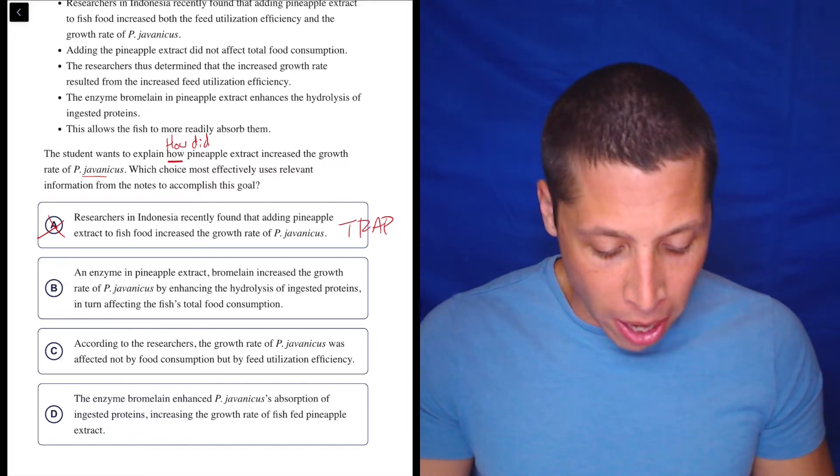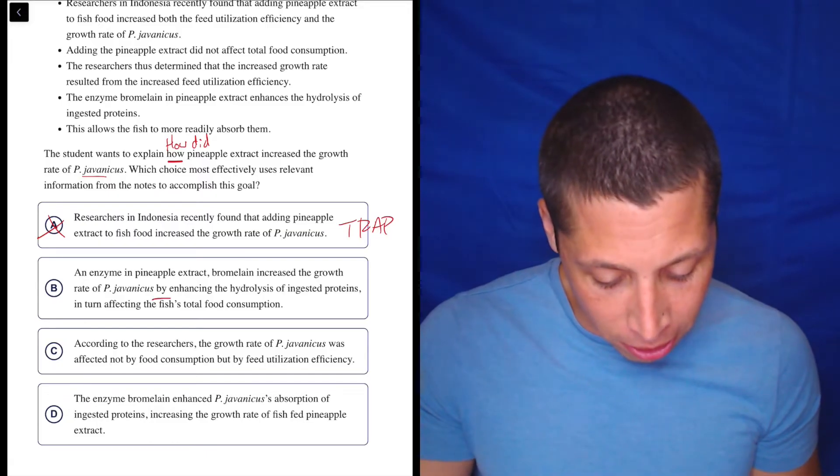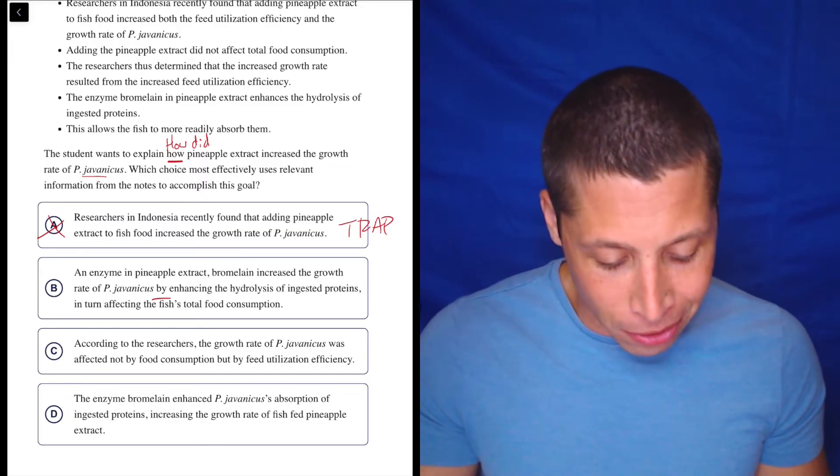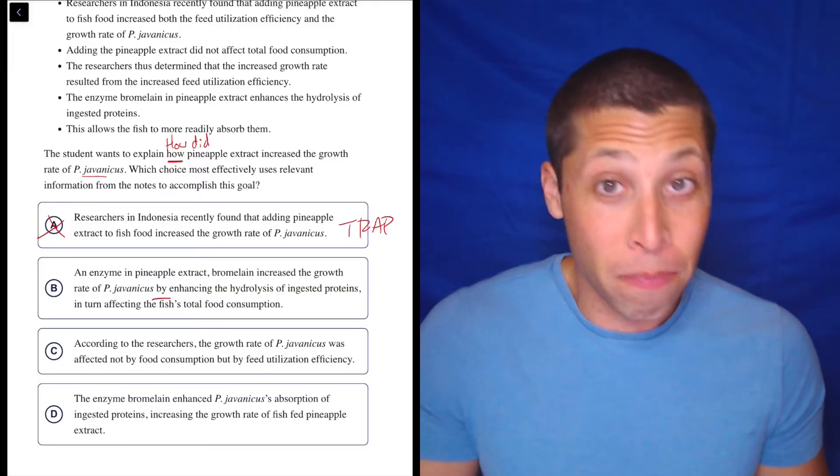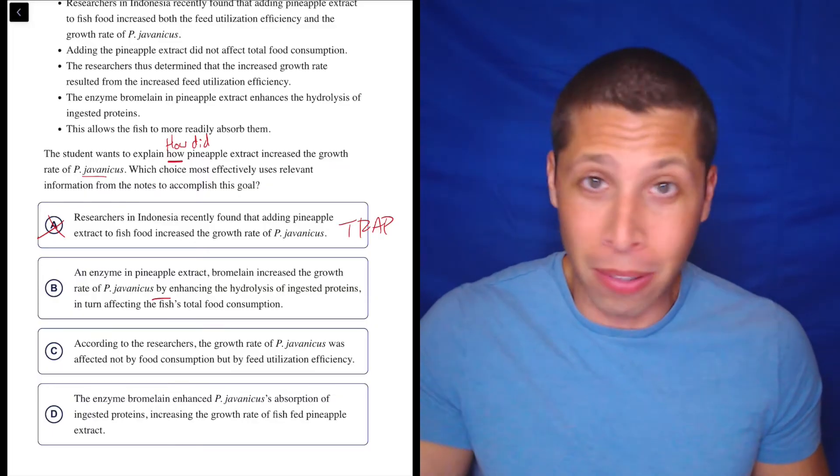B. An enzyme in pineapple extract, bromelain, increased the growth rate of jovenicus by enhancing the hydrolysis of ingested proteins, in turn affecting the fish's total food consumption. That seems like a how. So good, let's keep it in.